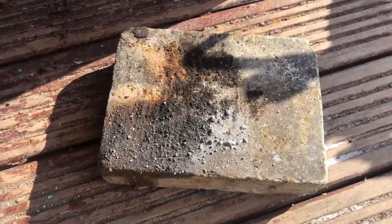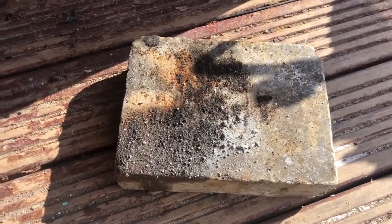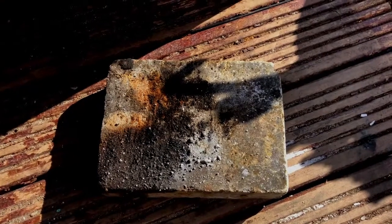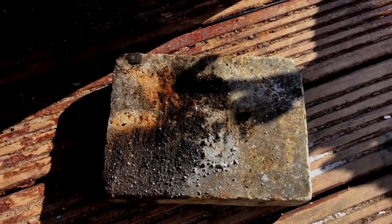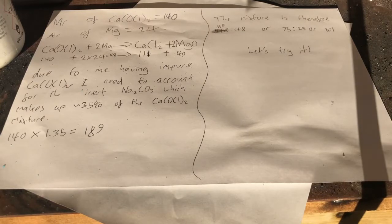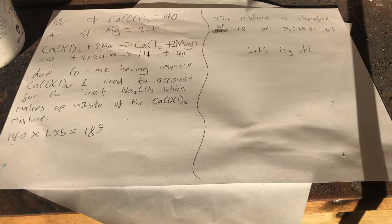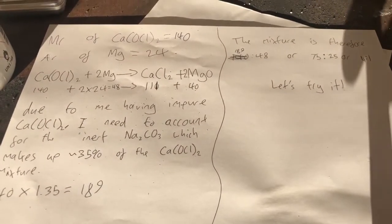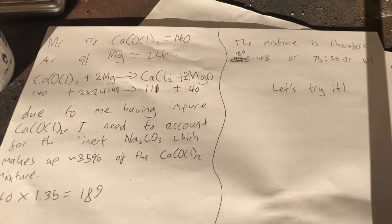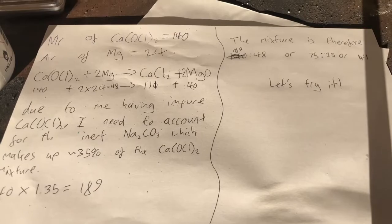There was definitely a reaction, as you could see in the previous video — that means I've got something right. I probably just need to work out the stoichiometric ratios. I've now worked out the stoichiometric ratios to this reaction. Basically it's 80% calcium hypochlorite and 20% magnesium powder. On here is how I made that conclusion — if you want to read it, just pause the video. Otherwise, let's get started.